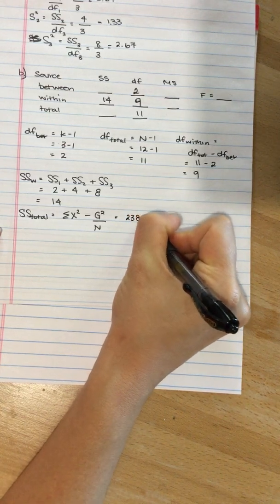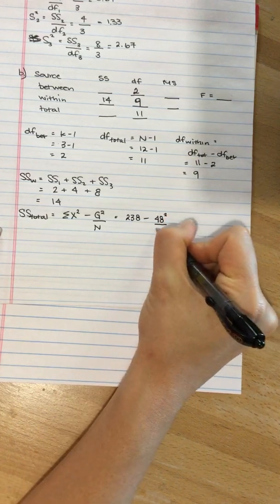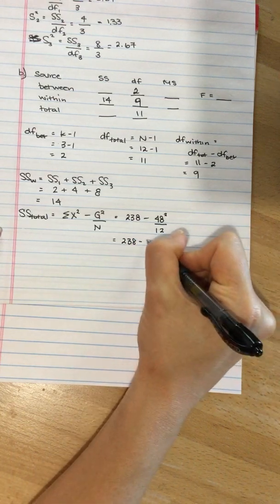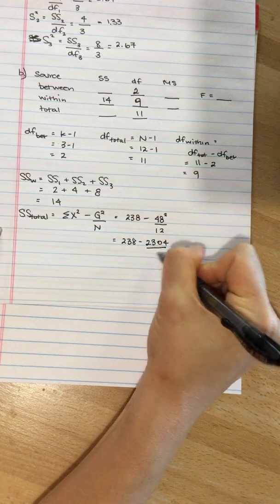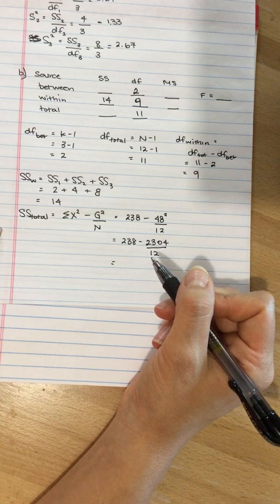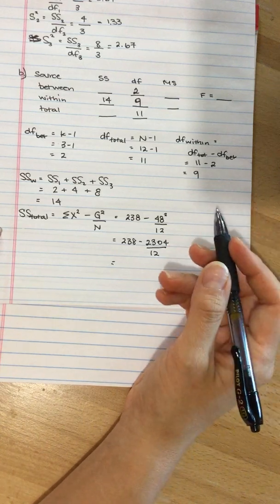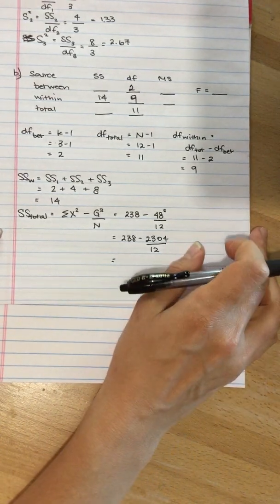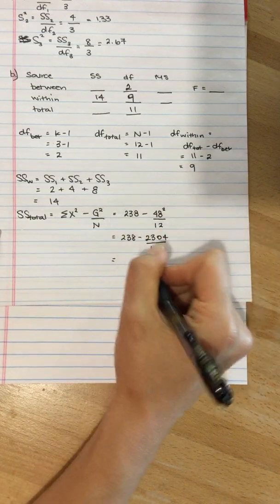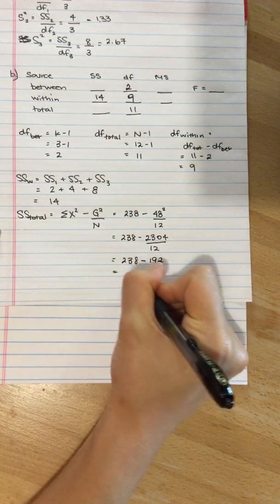We're given each of these values. So this is 238 subtract 48 squared divided by 12, that's 2304 divided by 12. Yes, show as much work as you can. You're doing the steps anyways, write it out. That way, if you make a mistake, your instructor can see where your mistake is and figure out what you did, and that's easier for them to grade and give you part marks. 238 subtract 192, which is 46.